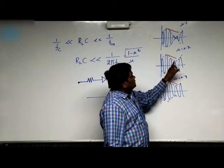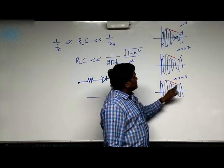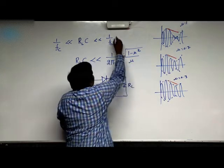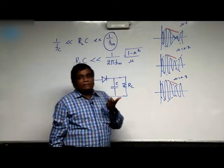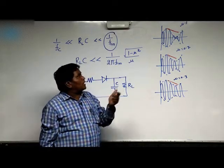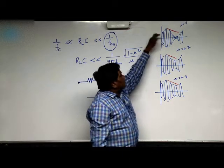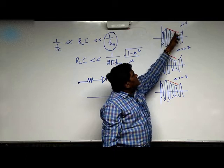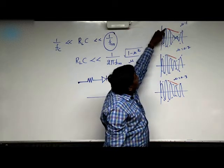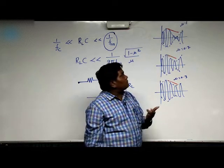The time taken to complete one cycle of the message signal is given by 1 by fm. Now the point is that when the time constant is too large, the voltage across the capacitor very gradually decreases and we are not in a position to track this portion of the waveform.